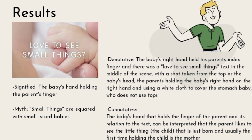The first example is 'Love to See Small Things.' The signified is a baby's hand holding the parent's finger. The denotative meaning: a baby's right hand holds the parent's index finger, with the text 'love to see small things' in the middle of the scene. The connotative meaning: the parents like to see the little things — the child that is just born. The myth is that small things are equated with small-sized babies.